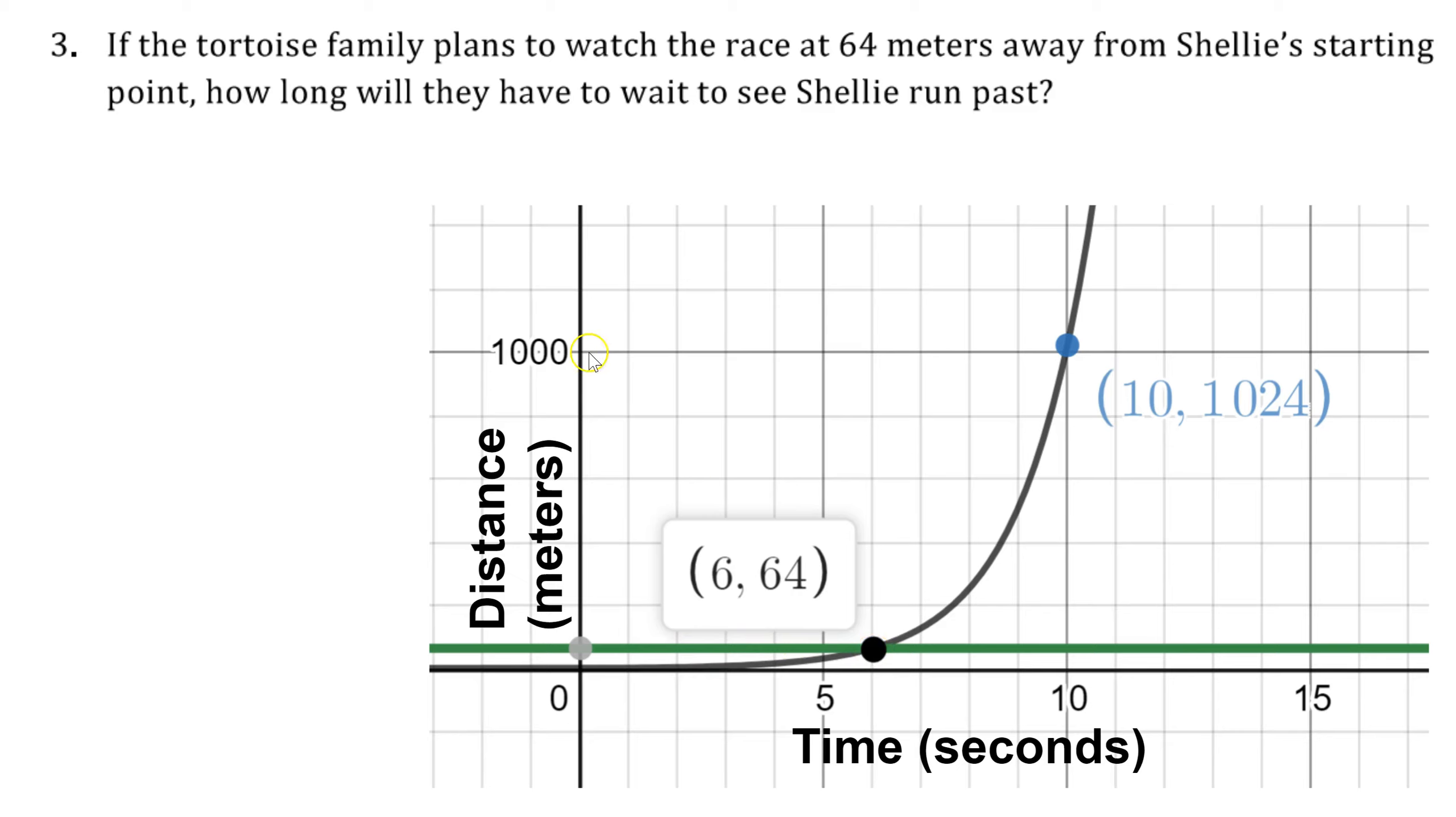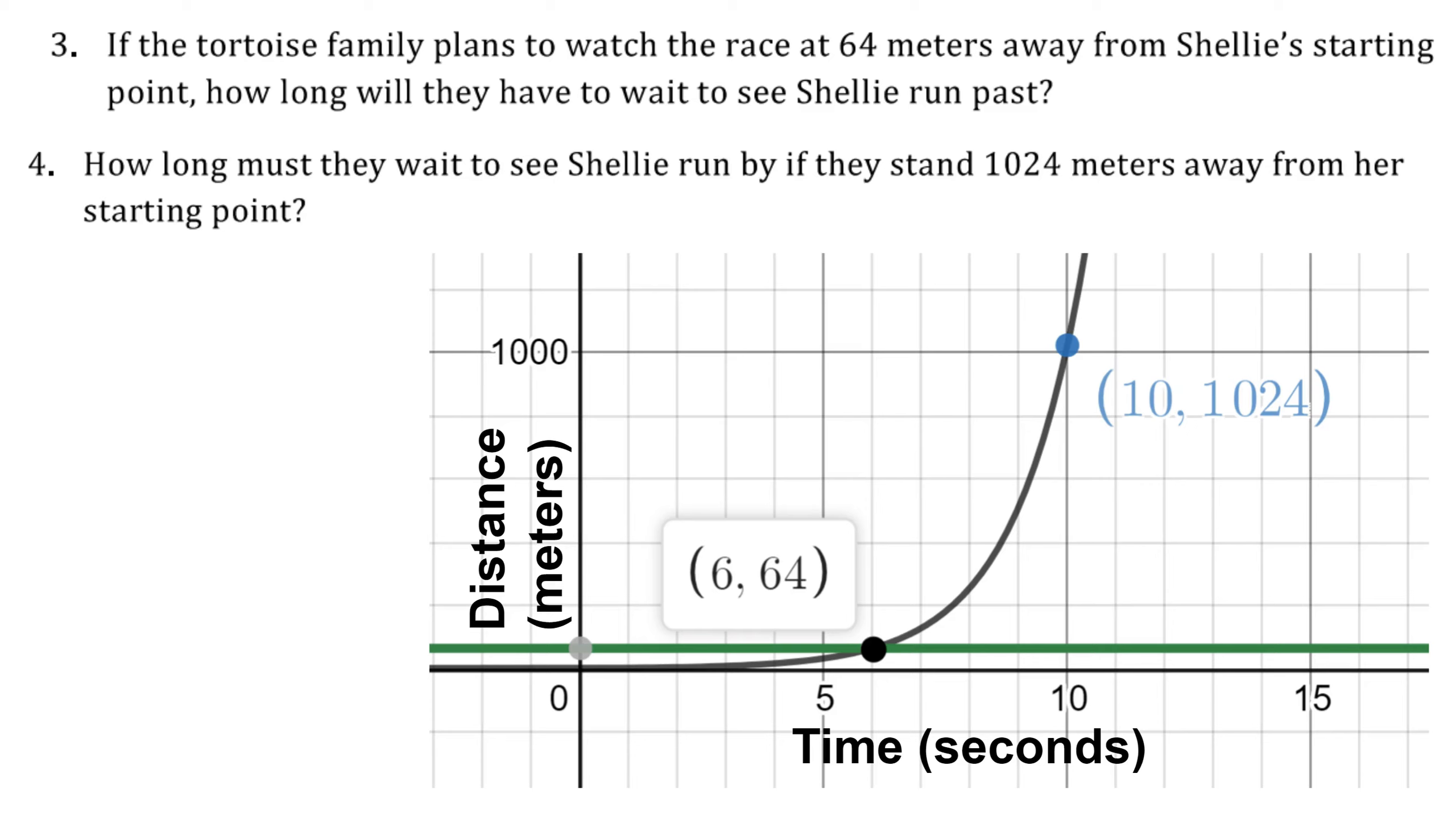Similarly, if I use that same type of logic, y = 1,024, I already know from the previous graph that that will take 10 seconds. I'm just reversing the way I'm thinking about it. Instead of substituting 10 into the equation to get 1,024, I'm looking at 1,024, the y value, and determining the x value. So we're inverting the way we're thinking about this. That answered question 4. It would be 10 seconds.